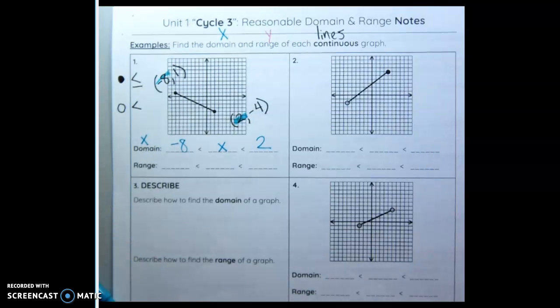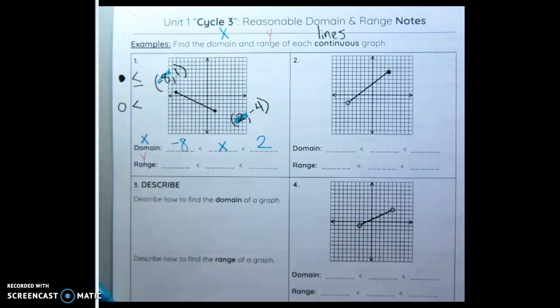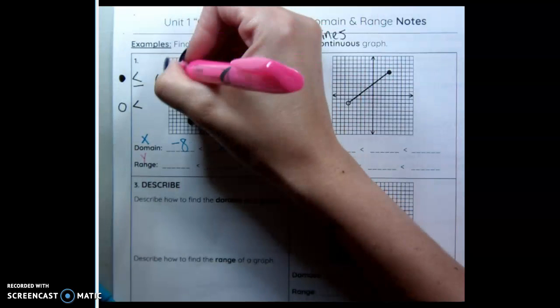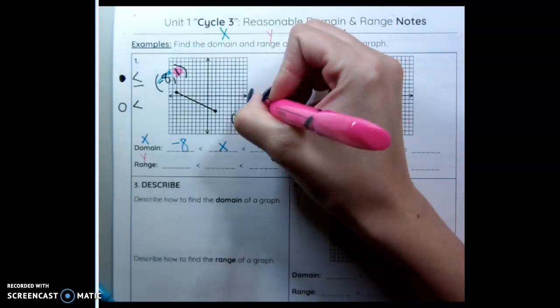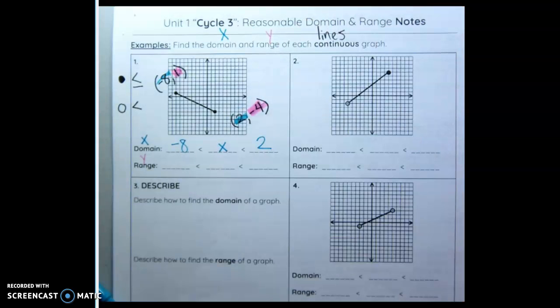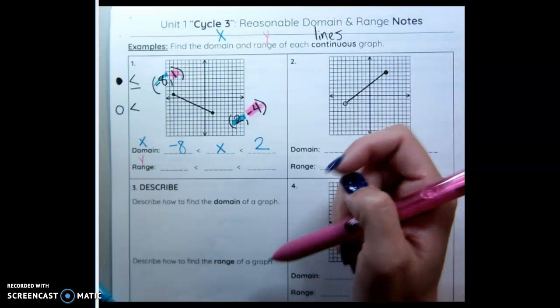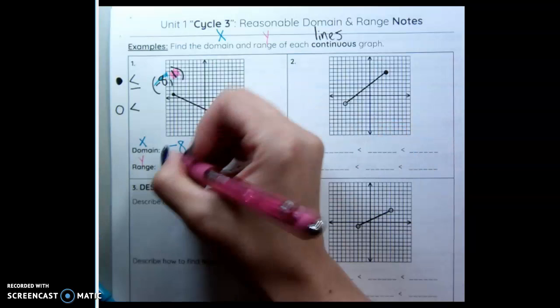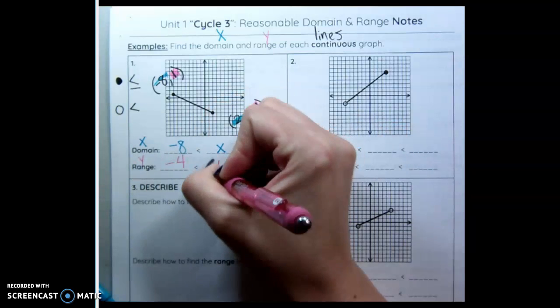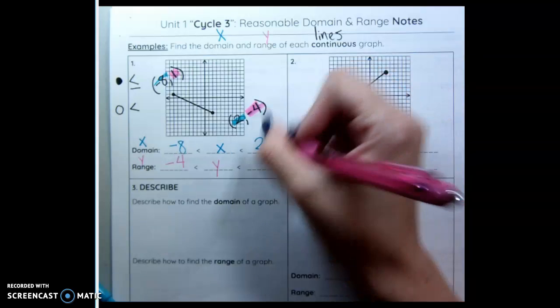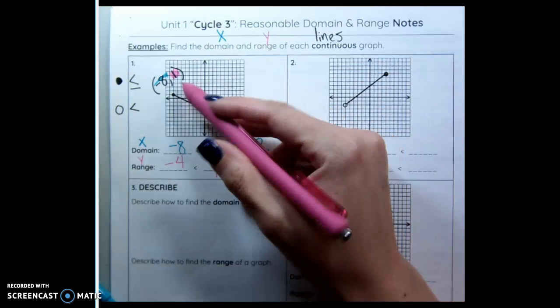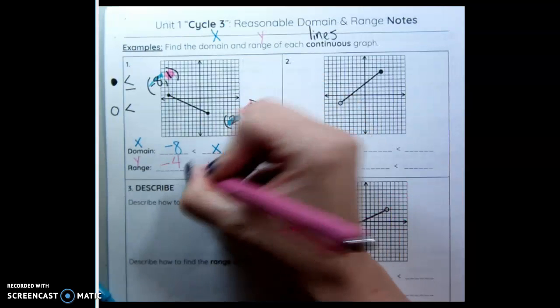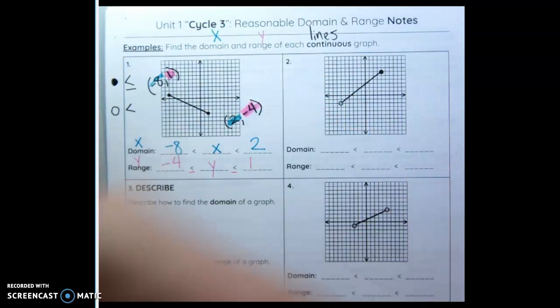So now we are on range. That's our y values. I'm going to highlight both of my y values here. I have 1 and negative 4. Which of those is less? Negative 4. Y goes in the middle. And 1 goes at the top. Now all of these are closed in. So they need the equal to sign underneath.